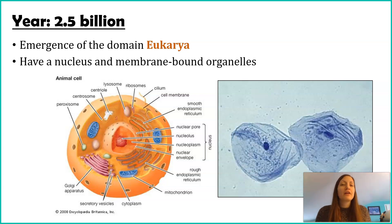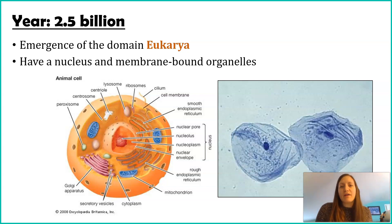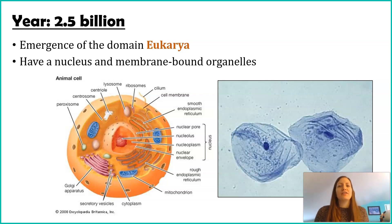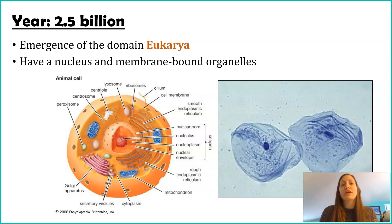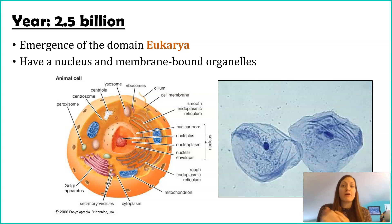Keep in mind that prokaryotes do have DNA, and those processes and that DNA are not housed in any kind of membrane, whereas in eukaryotes they are. So what we're going to explore is how that happened — how did we get the evolution of eukaryotes?